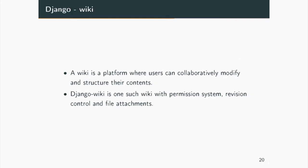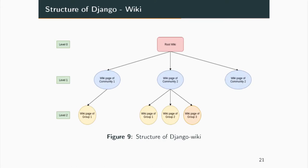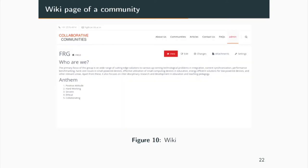We integrated Django Wiki for this content. It has a permission system — controlling who can edit and who can view — revision control where each edit is saved as a revision, and support for images, files, and more. The main reason for choosing Django Wiki is its structure: a root wiki contains information for the whole portal, under which each community has its own wiki page, and each group under a community has a separate wiki page. This is a screenshot of the wiki page of one of the communities.